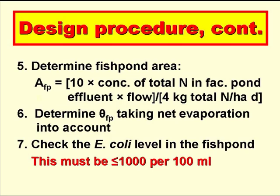So the fish pond area in square meters is given by 10 times the concentration of total nitrogen in the facultative pond effluent — which is the fish pond influent in milligrams per litre — times the flow in cubic meters per day, divided by 4, the total nitrogen loading in kilos per hectare per day. We then calculate the retention time in the fish pond, taking net evaporation into account, and then we determine the E. coli count in the fish pond, and this must be no more than 1,000 per 100 ml.